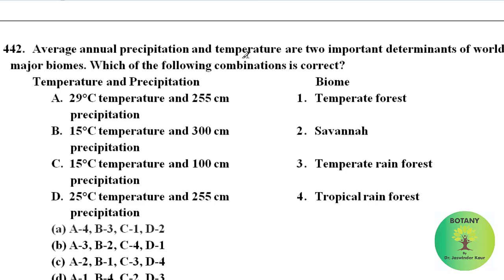Average annual precipitation and temperature are two important determinants of the world's major biomes. A temperature of 29°C and precipitation of 255 cm is present in tropical rainforest. 15°C temperature and 100 cm precipitation is present in temperate forest. 25°C temperature and 255 cm precipitation is found in savannahs. The correct option is option A.